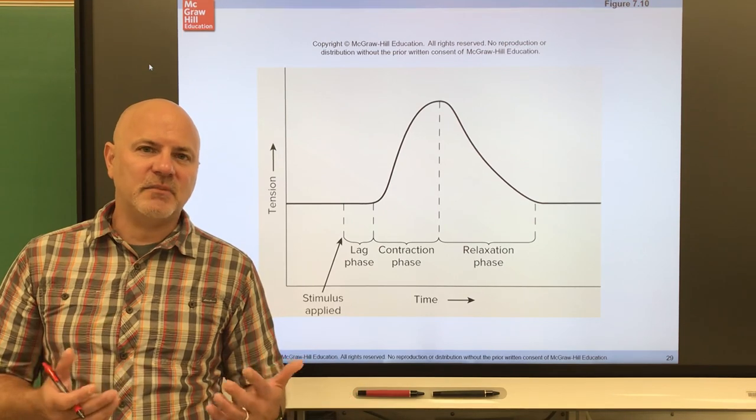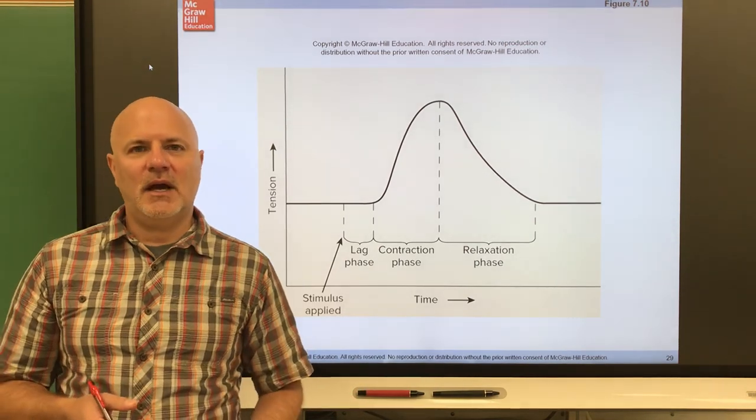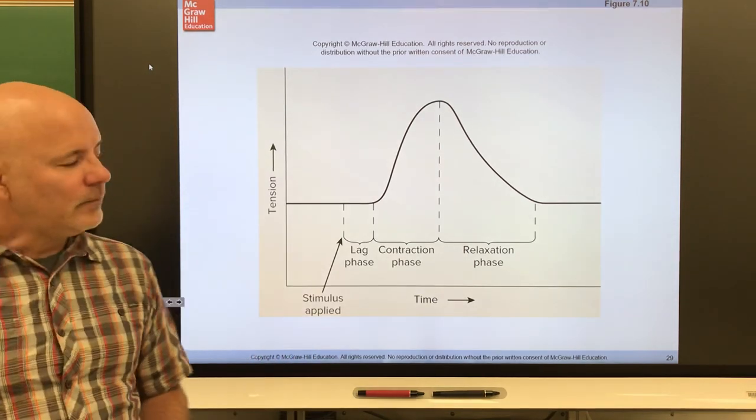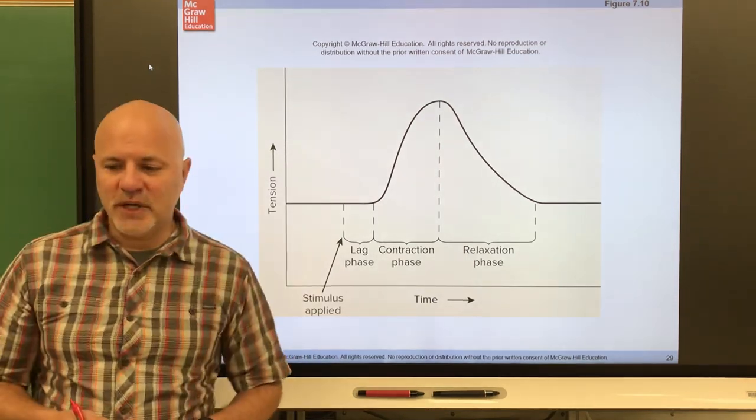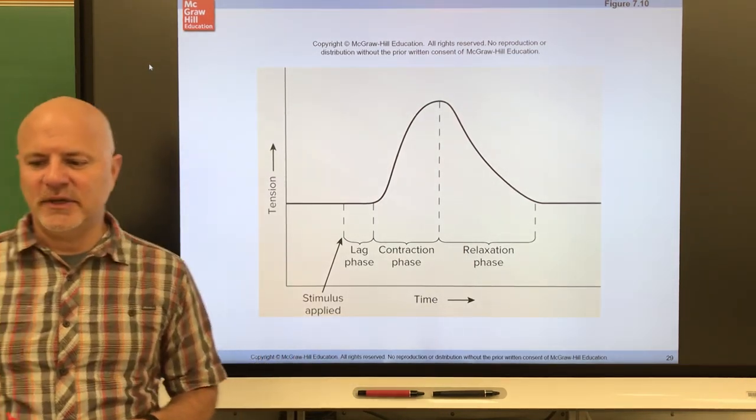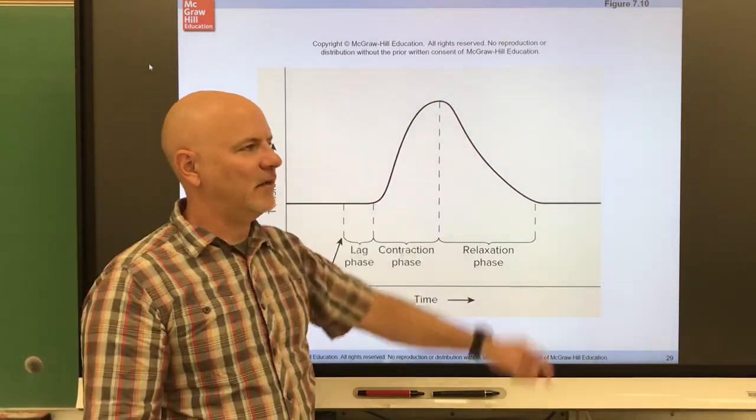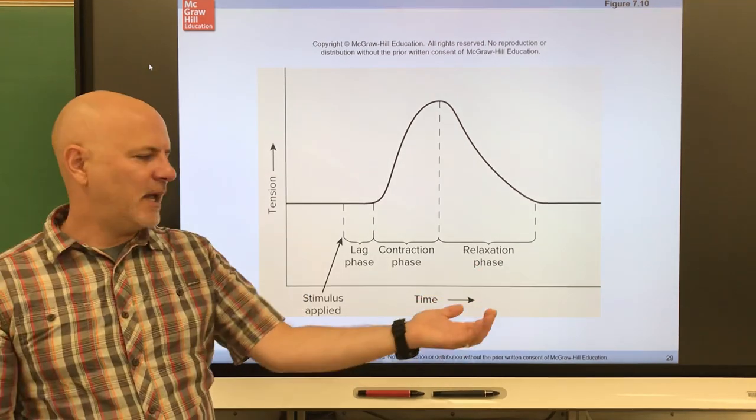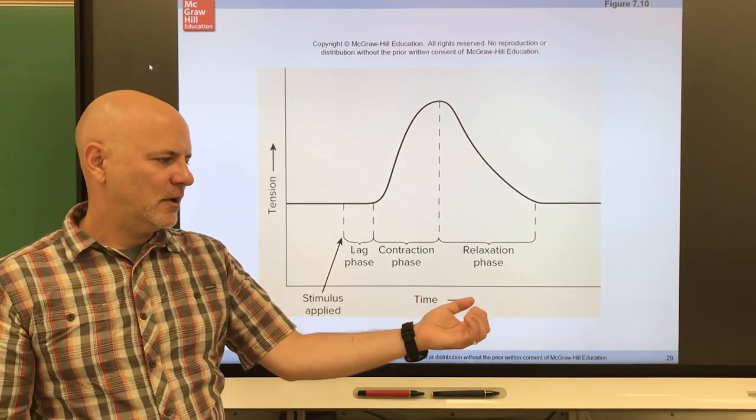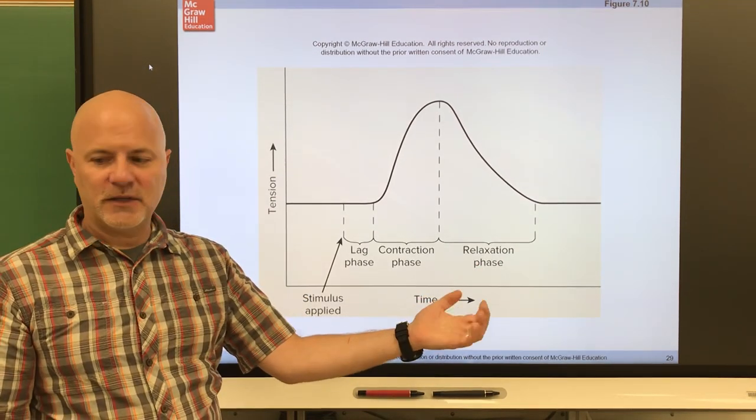All right, let's move on to a twitch. A twitch is a single stimulus that causes a muscle to contract and relax. So we have full contraction and then relaxation. So I'm going to do this with my hand, so here's a twitch, here's another twitch, and so on.